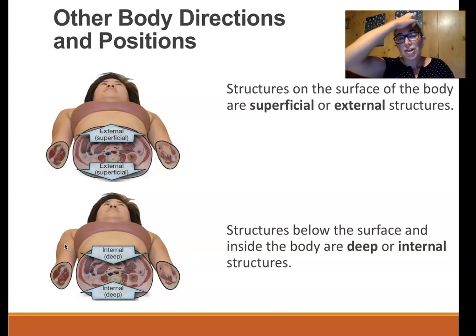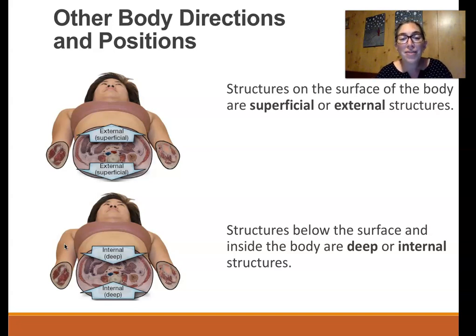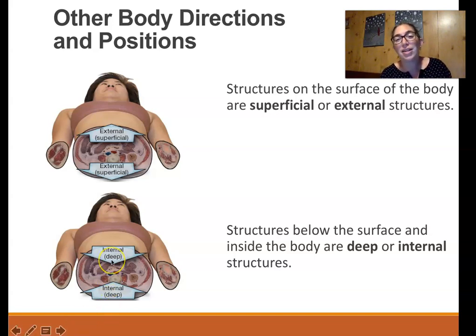Some other terms for the location of a tumor, laceration, or bleeding: if it's on the outer part of the body, we say it is external or superficial. If it's something affecting the organs deeper inside the body, then we would call it an internal or deep tissue disease or injury.